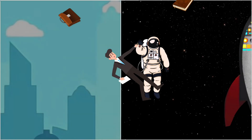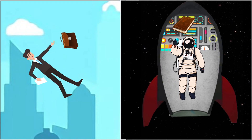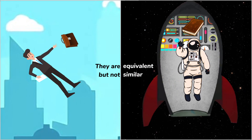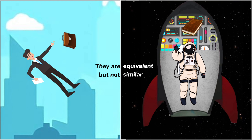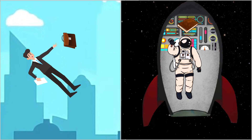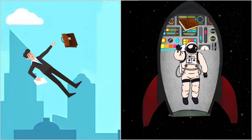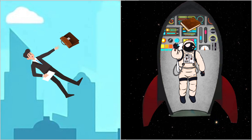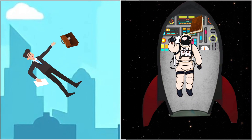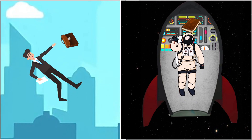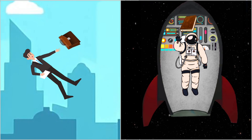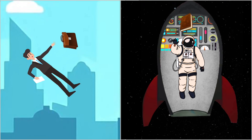Einstein looked at these two scenarios — the falling man and the spaceship at constant velocity — and said they are equivalent, though not identical. Physically, they mean the same thing: the man falling from the roof has not experienced acceleration or a gravitational field, so he is also considered to be an inertial observer, just like the person in the rocket.